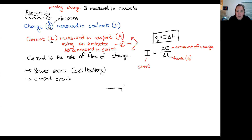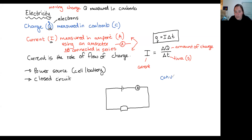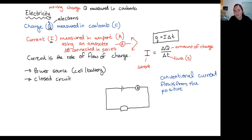One of the things you learned way back when — and I'm pretty certain many of you have forgotten — is that you also learned about which way conventional current flows. Our rule here is that conventional current flows from the positive terminal of the battery or cell around the circuit to the negative terminal.